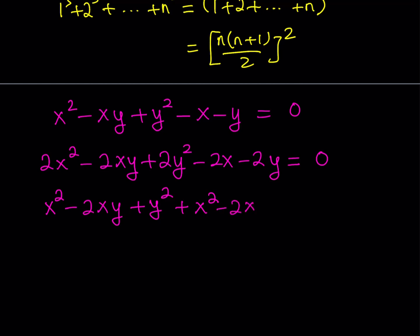I have leftover terms: x squared and negative 2x. To complete the square, you take the coefficient of x, divide by 2, and square it — half of 2 squared is 1. So I add 1 to both sides, making x minus 1 quantity squared. Similarly, I have y squared and negative 2y left over, so I add another 1. That means I've added 2 to the left-hand side, so 0 on the right becomes 2.